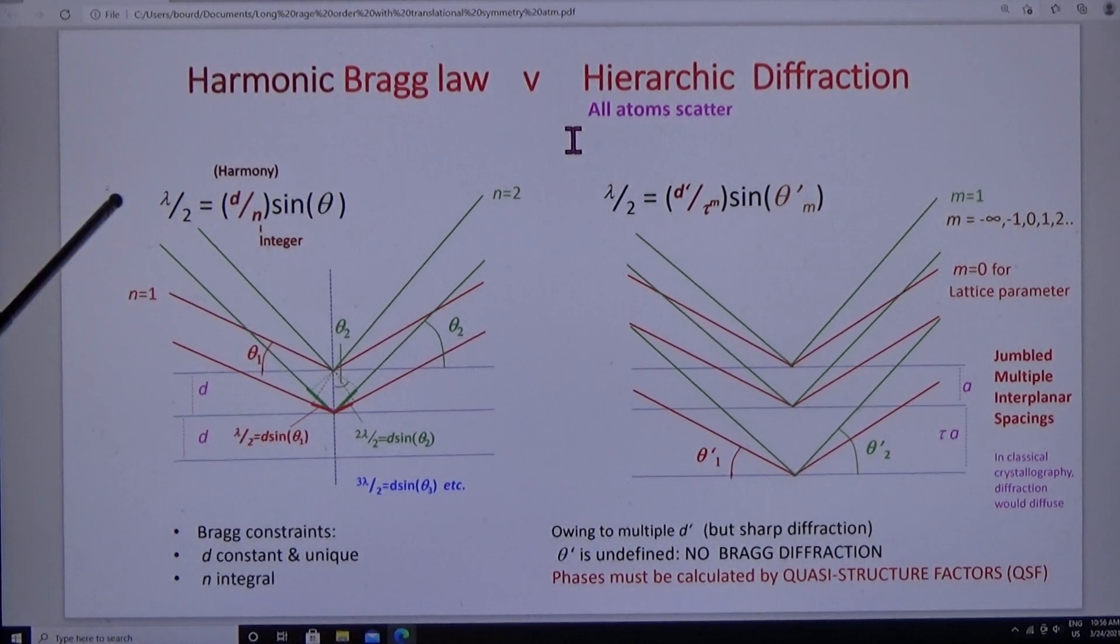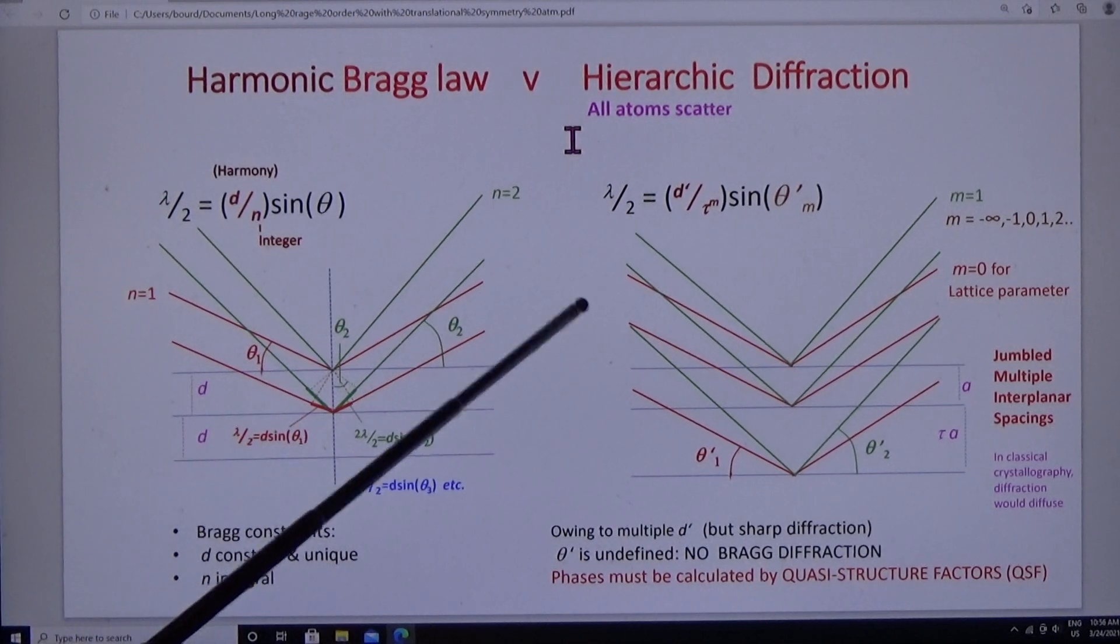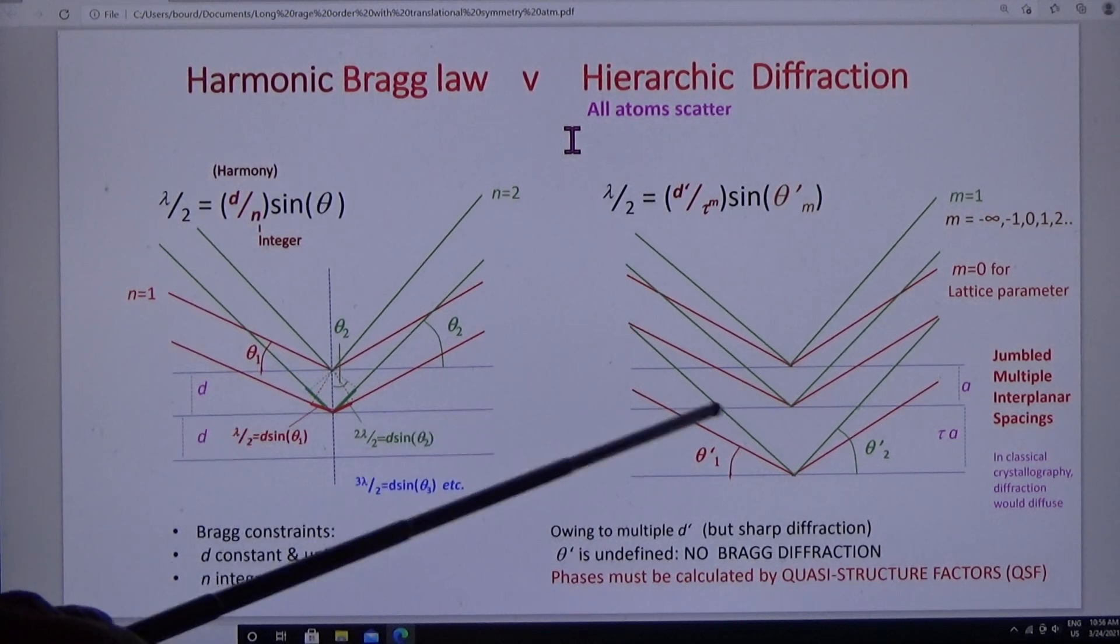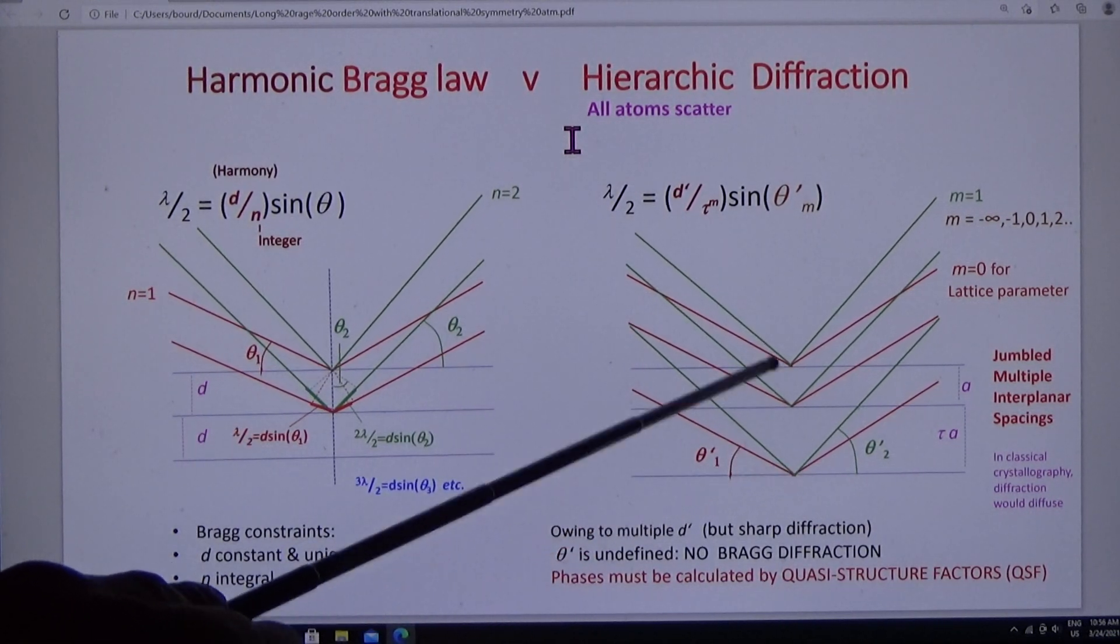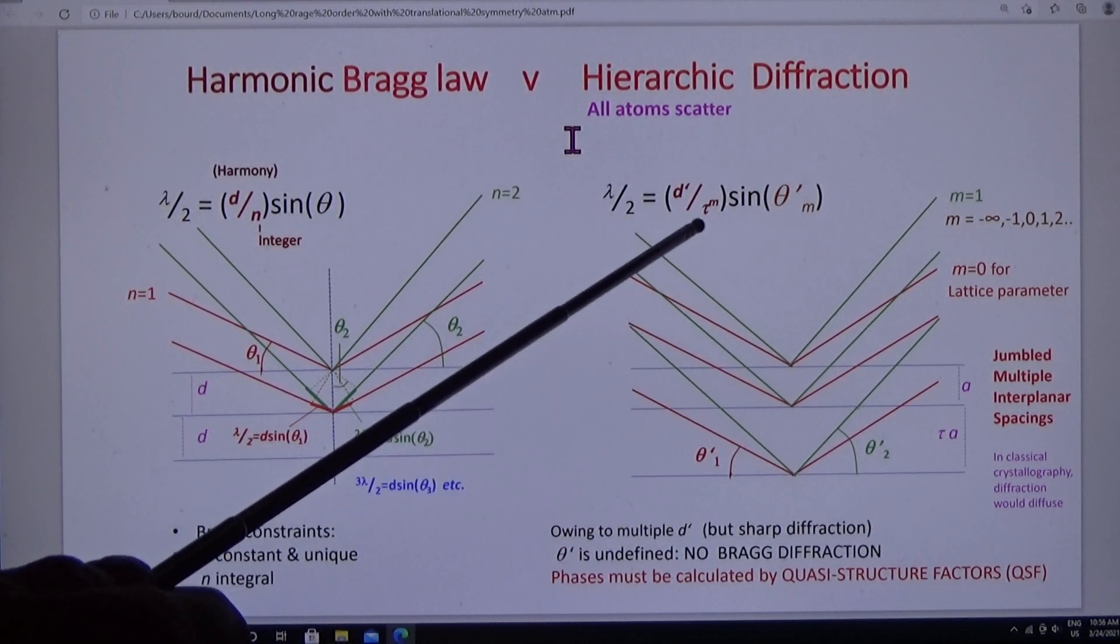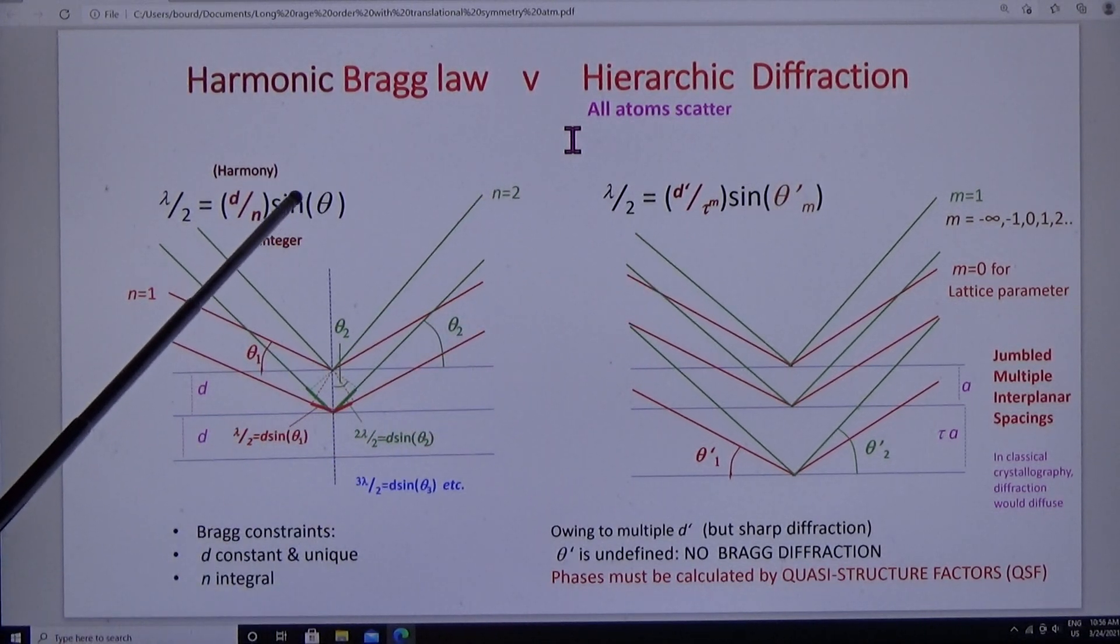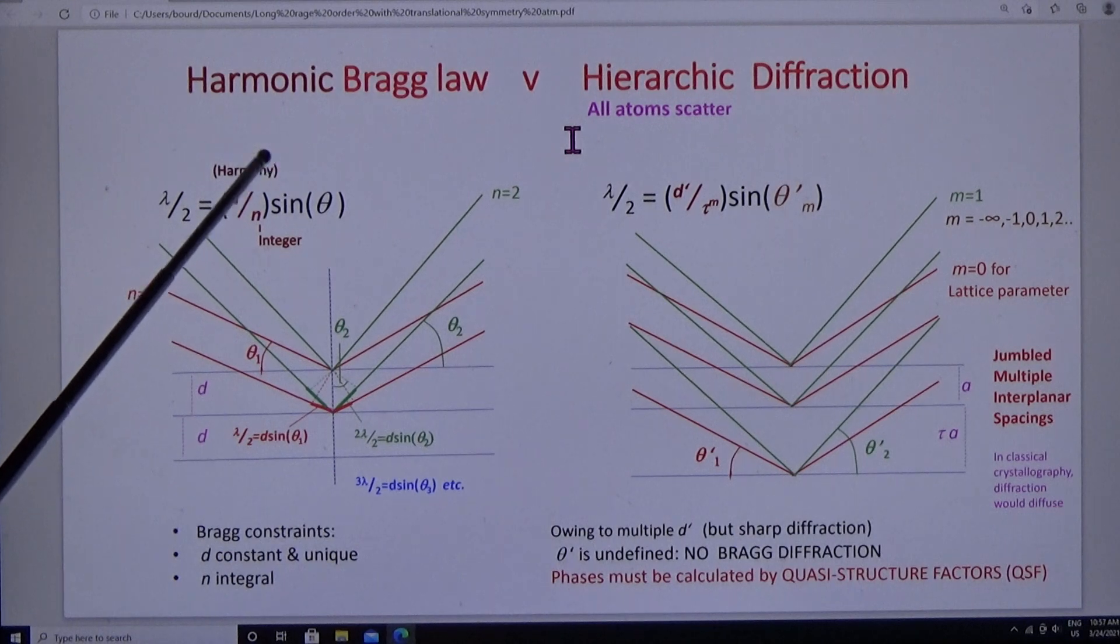The quasicrystal is another ballpark. There are multiple interplanar spacings. So all the orders diffract at once. If you want to know how the phases add, you have to calculate the structure factor, because it's independent of theta.